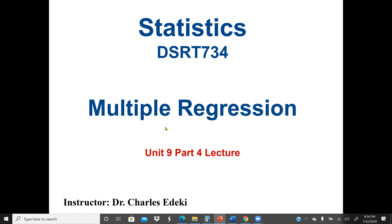The difference between multiple regression and simple regression is that in simple regression, the independent variable is only one — one variable will determine the dependent variable. In multiple regression, we may have more than one variable that will determine the dependent variable Y.